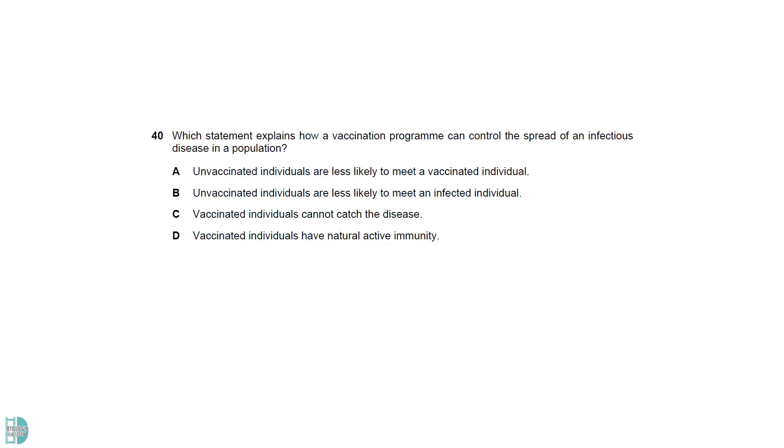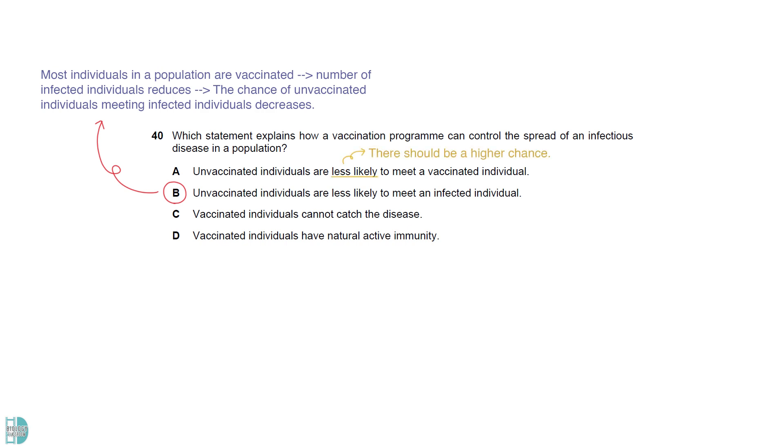B is the answer because when most individuals in a population have been vaccinated, the number of infected individuals will be reduced. This decreases the chance of those who are not vaccinated to meet someone who has the disease. A is not correct because there should be a higher chance of meeting a vaccinated person. C is not true because the protection is not 100%. Some vaccinated people can still be infected. D is wrong because vaccination is artificial active immunity as it will not occur without human intervention.